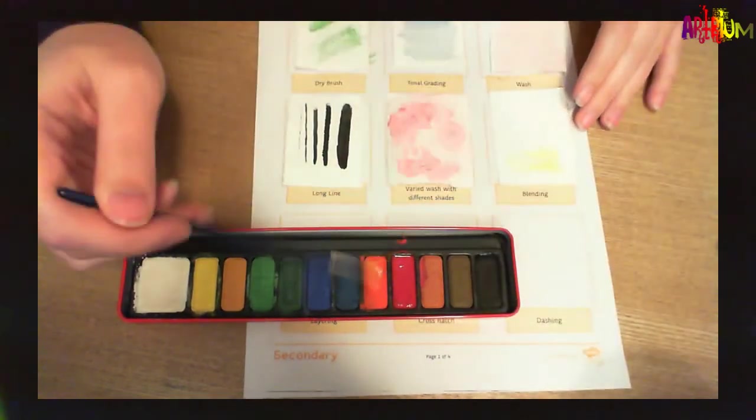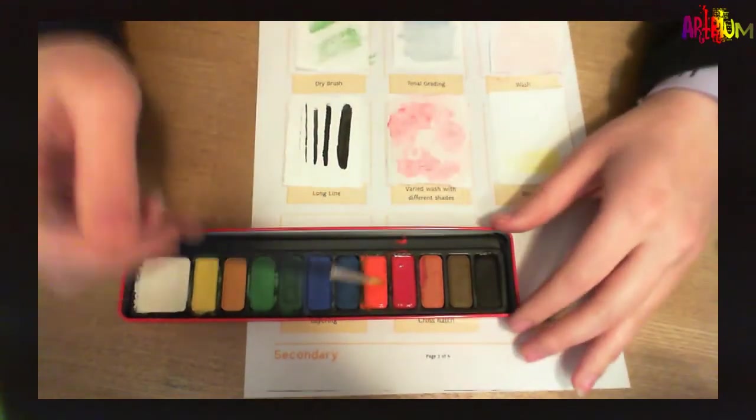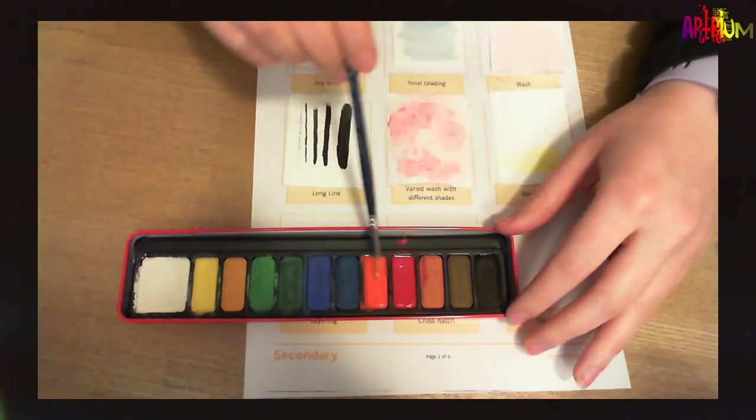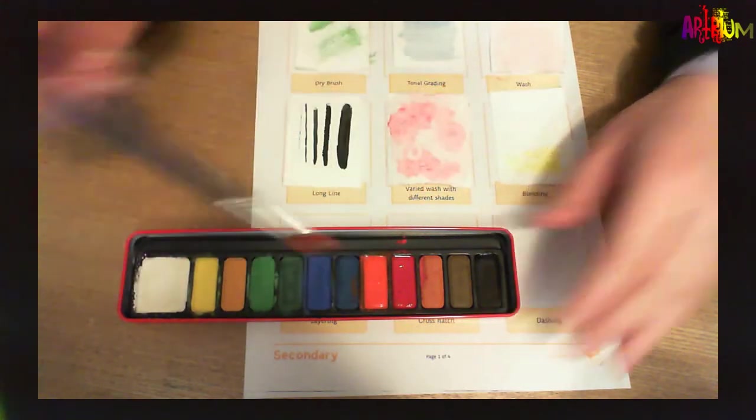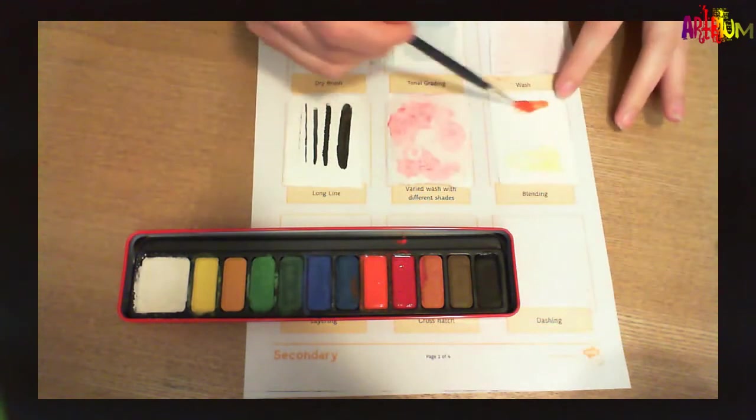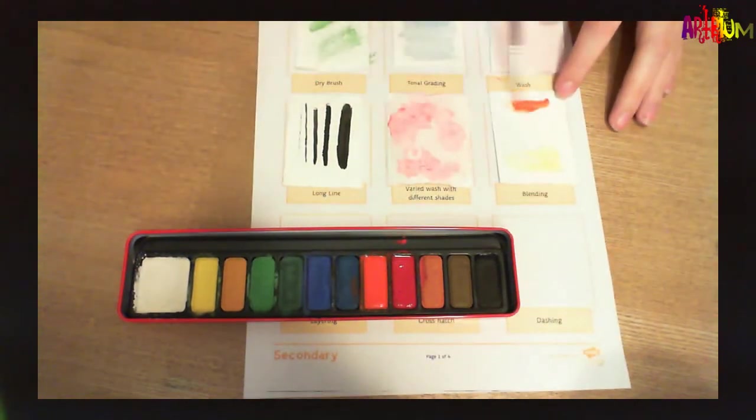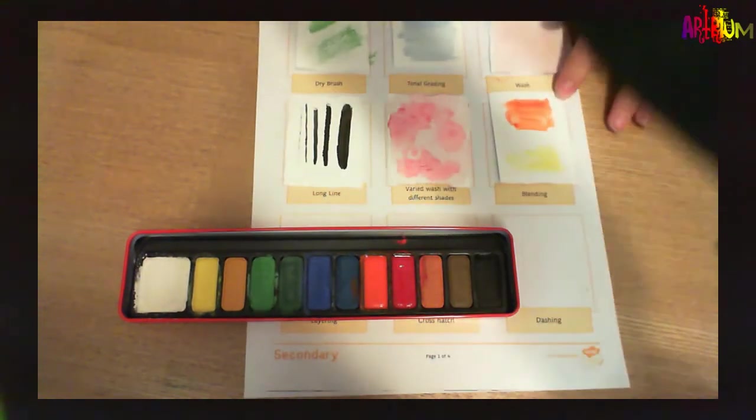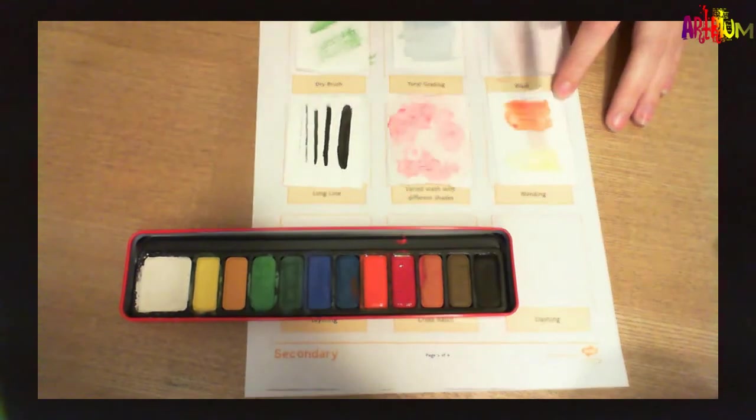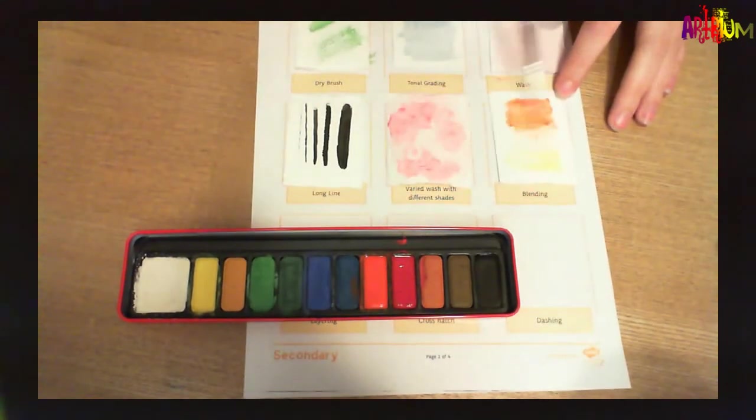I'm going to go straight into the orange, just mixing that a little bit to get the consistency quite thick and a bit more pigmented. Pop that at the top. I'm going to work a little bit, move it down to the middle. Clean my brush. And then drag this up.